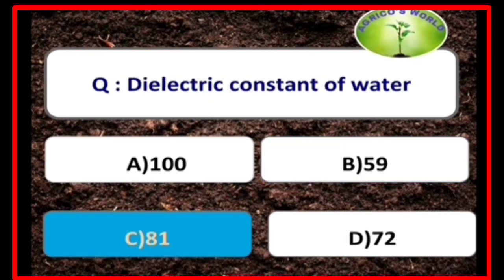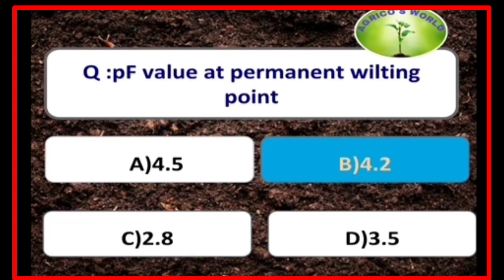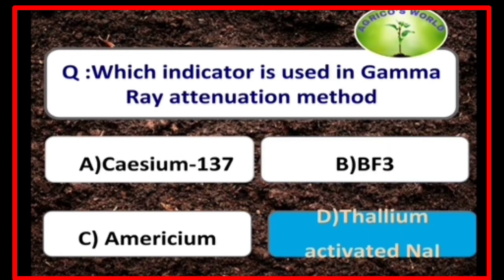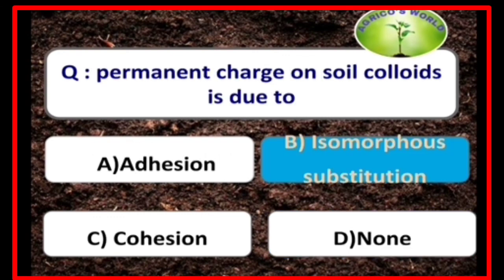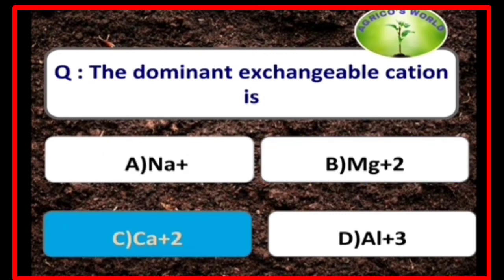The dielectric constant of water is 81. The PF value at the permanent wilting point is 4.2. Permanent charge in soil colloids is due to isomorphous substitution. The dominant exchangeable cation is calcium.